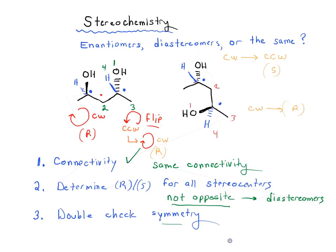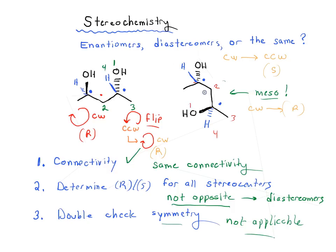There is one exception worth noting: sometimes molecules will have opposite R and S designations but will actually be different versions of the same meso compound. It's actually worth noting that the right molecule here is a meso compound — if you look at the fact that the R and S designations are opposite and that there's a symmetrical distribution of functional groups around the middle carbon, this is actually a meso compound drawn as a rotated version. Anyway, these molecules here are diastereomers.